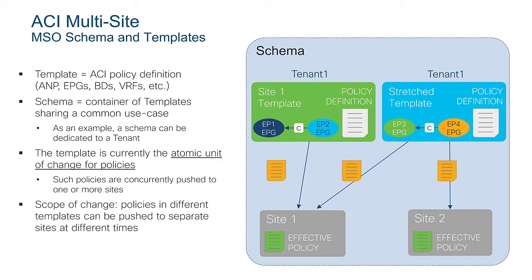If I want to have different configurations pushed at different times, I need to divide that configuration into different templates. I could have a site one template with all local objects for site one, and a site two local template to push configuration only to site two. But every time I want to stretch an object — like a VRF that must exist between different sites, or a bridge domain extended between sites — I need to define it in a template associated to multiple sites, which means pushing the configuration to all those sites simultaneously.